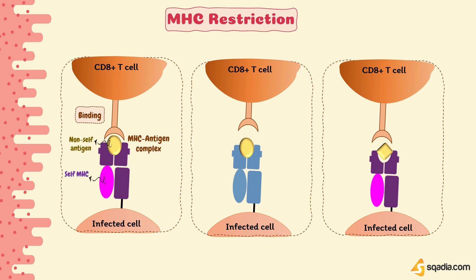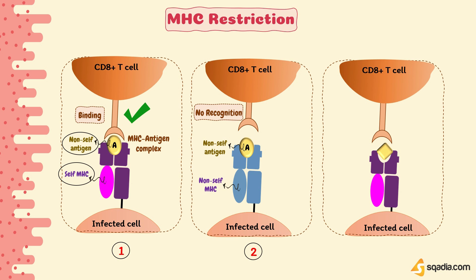Consider CD8+ T cells in these diagrams. In the first diagram, there is a self-MHC on the surface of a virally infected cell that has compatibility with non-self viral peptide A. This peptide-MHC complex will be recognized by the CD8+ T cell receptor, and T cell killing will proceed. In the second figure, there is again a CD8+ T cell and a virally infected cell, but its surface has a non-self MHC. Although this MHC also has compatibility with viral peptide A, this complex will not be recognized by CD8+ T cells, and thus there will be no T cell killing.